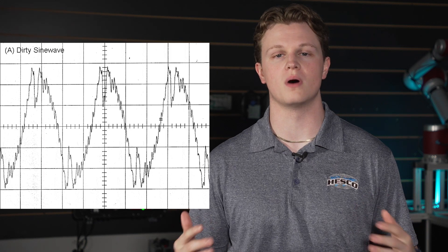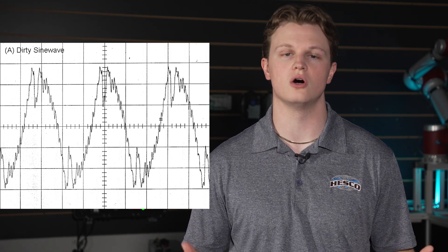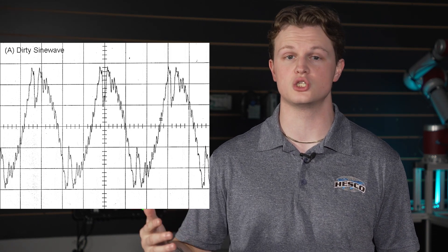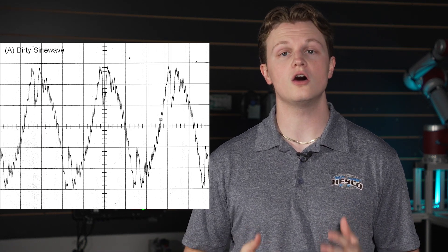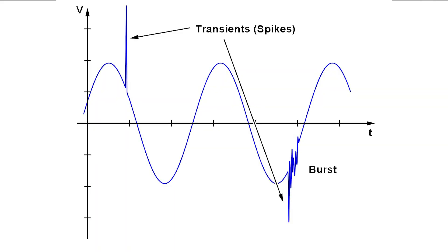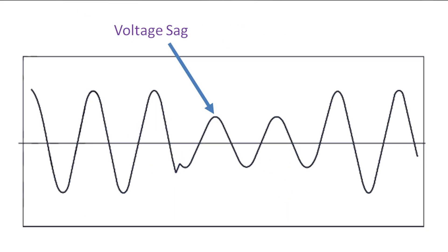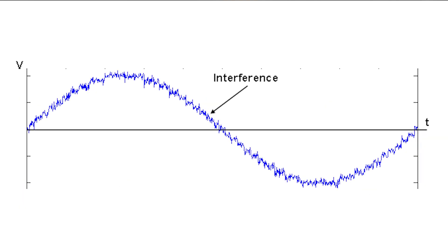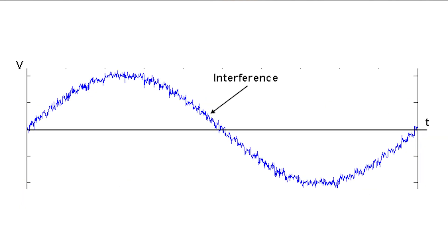Dirty power is characterized by a distorted sine wave with high total harmonic distortion, also known as THD, often exceeding 10% or more. It fluctuates in voltage and frequency, leading to voltage spikes, sags, and significant electrical noise.